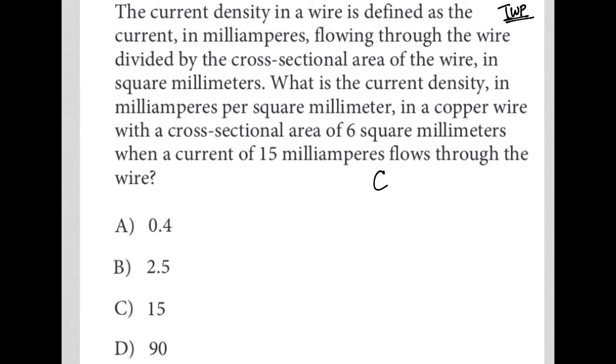So, the current density, current density in a wire is defined as the current. In fact, I'm going to say CD for current density is equal to the current, which is in milliamperes flowing through the wire divided by the cross-sectional area of the wire. So, I'm going to just write down cross-section area of wire in square millimeters. So, this is millimeter squared versus the unit for current is milliamperes, which is just little m capital A. Okay, so just keeping that in mind, the units might matter.